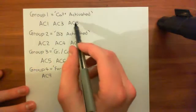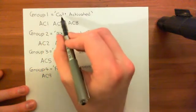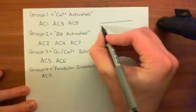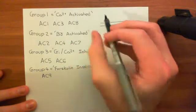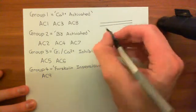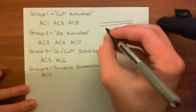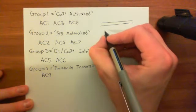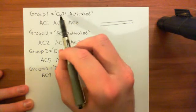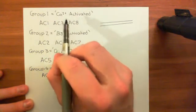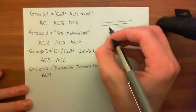Remember, the special thing about group 1 adenylyl cyclases was that they were activated by calcium. So if calcium goes up in the cytoplasm nearby the adenylyl cyclase enzyme in this group, it will cause activation. However, if the adenylyl cyclase has an alpha-I GTP subunit bound to it, then even if calcium goes up nearby, it will not cause activation of that adenylyl cyclase enzyme. Let's discuss what is known about the activation by calcium of adenylyl cyclase 1 and 8, because they have quite interesting mechanisms.